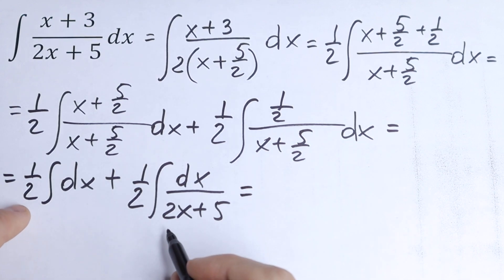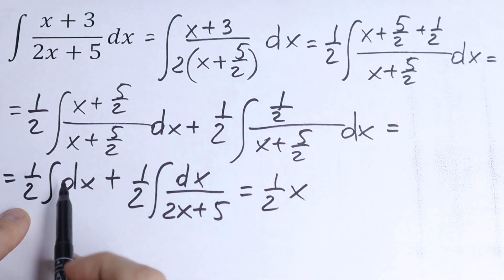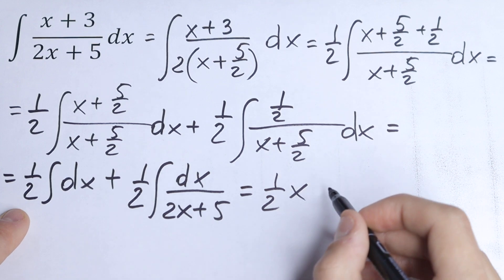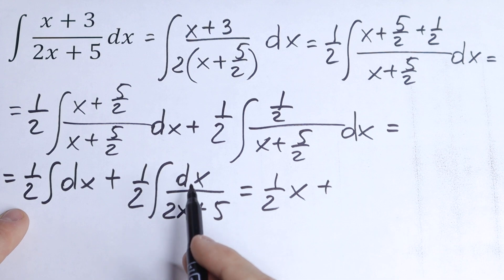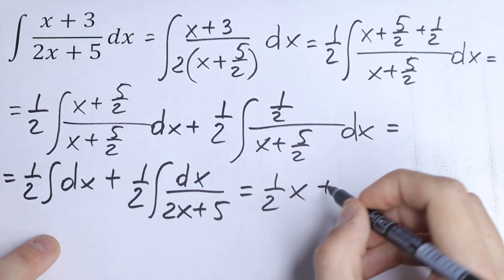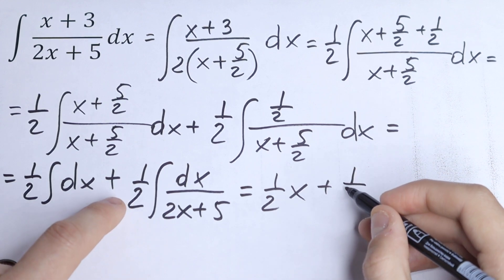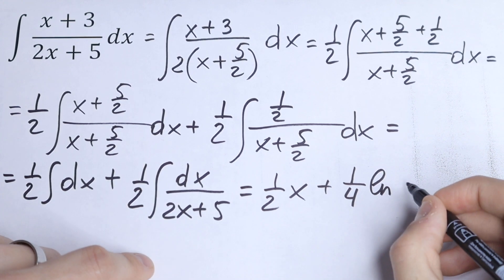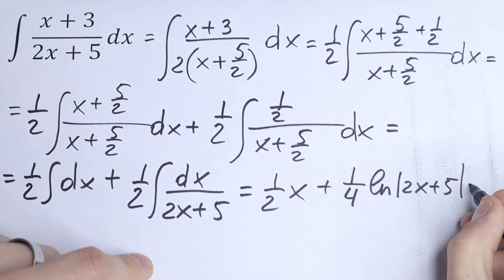So we have the classic cases. Integrating the first part gives us (1/2)x. For the second part, this is the table case — the natural log integral — so we get one half times one half, which is one fourth, times the natural log of the absolute value of (2x + 5), plus C.